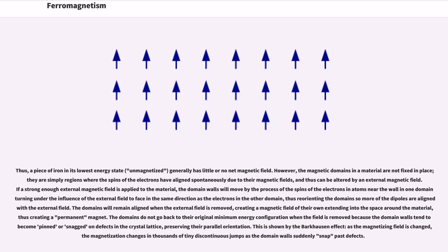The domains do not go back to their original minimum energy configuration when the field is removed because the domain walls tend to become pinned or snagged on defects in the crystal lattice, preserving their parallel orientation. This is shown by the Barkhausen effect. As the magnetizing field is changed, the magnetization changes in thousands of tiny discontinuous jumps as the domain walls suddenly snap past defects.